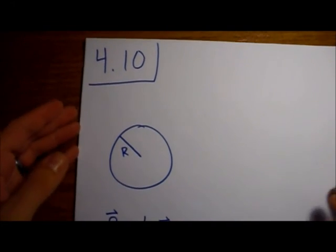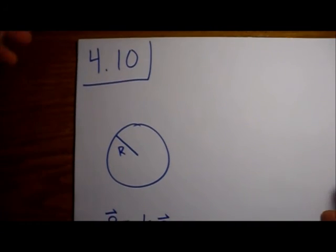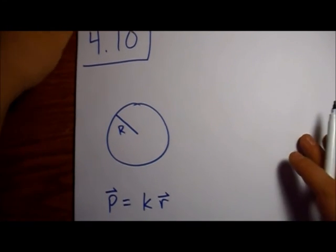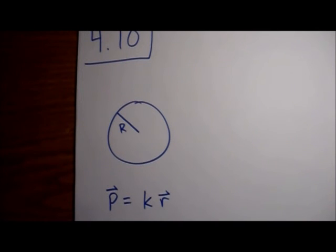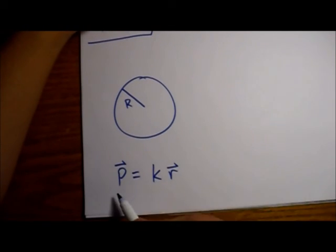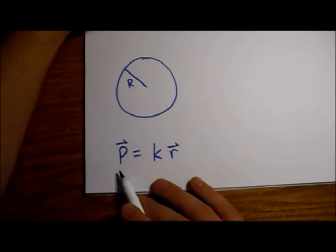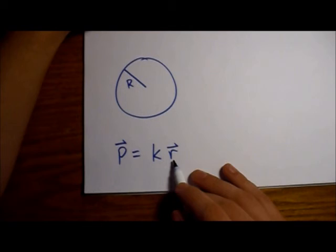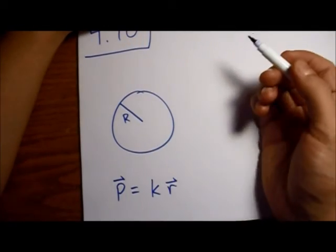Alright, this is Griffith's electrodynamics problem 4.10. We're going to be dealing with a sphere of dielectric. It has a radius of big R, and this sphere has a polarization built in which is this constant K multiplied by the vector R, which is just the vector from the center.